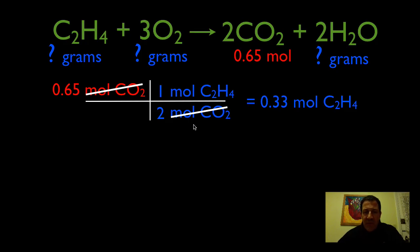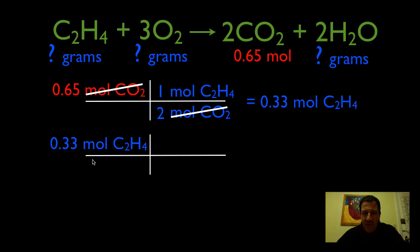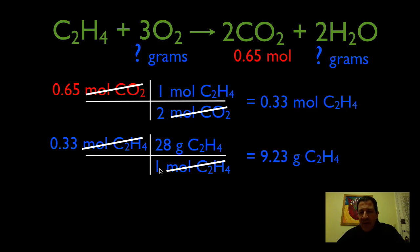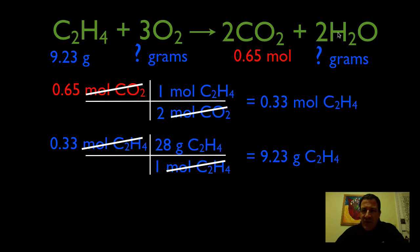But we don't want moles — we want grams. So we're going to convert from moles to grams using the molar mass. We put railroad tracks down and put one mole on the bottom to cancel the moles of C2H4, and the molar mass on top. Cancel the units and multiply 0.33 times 28. We get 9.23 grams of ethylene needed to produce 0.65 moles of carbon dioxide.